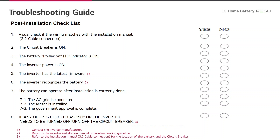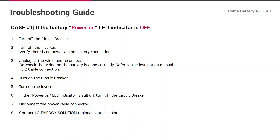If any of the 7 points is checked as no, or if the inverter needs to be turned off, then you have to turn off the circuit breaker. In the following slides, we will show you three different cases and the right actions.